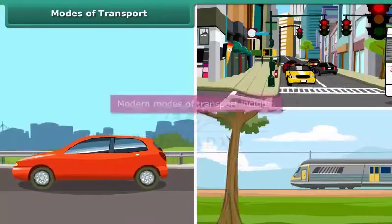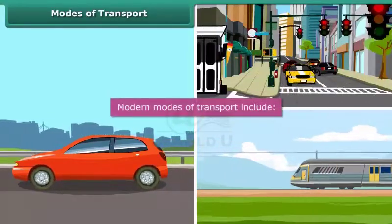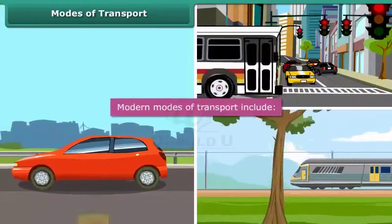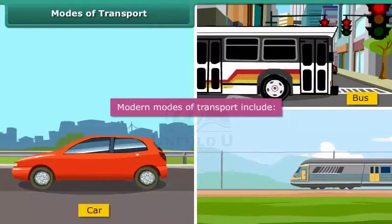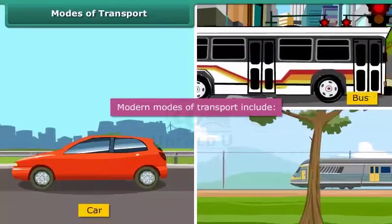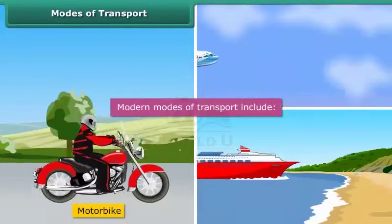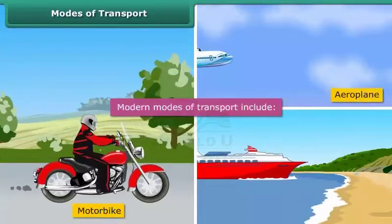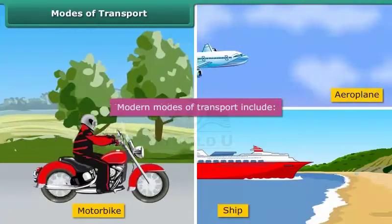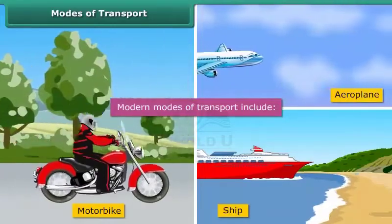As you can see, hence we now have cars, buses, roads, railways, motorbikes, aeroplanes, ships, etc. to travel.